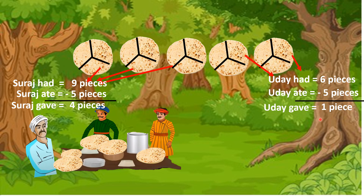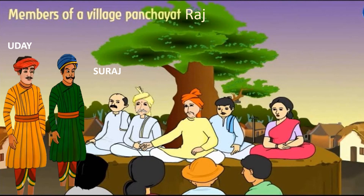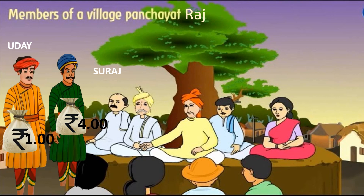Therefore, from this we can see Uday has to get only one rupee and Suraj has to get four rupees. The members of the village panchayat gave the solution: Suraj gets four rupees and Uday gets one rupee.